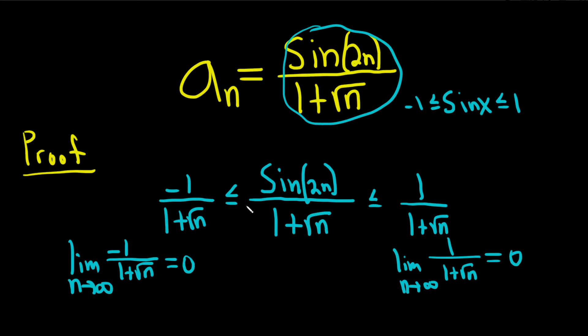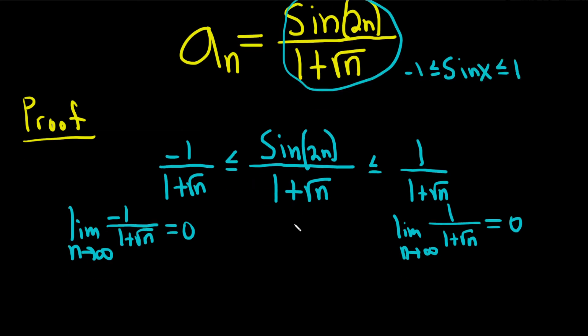So you have the sequence on the left approaching 0, you have the sequence on the right approaching 0. This is trapped in the middle, therefore it must also approach 0.